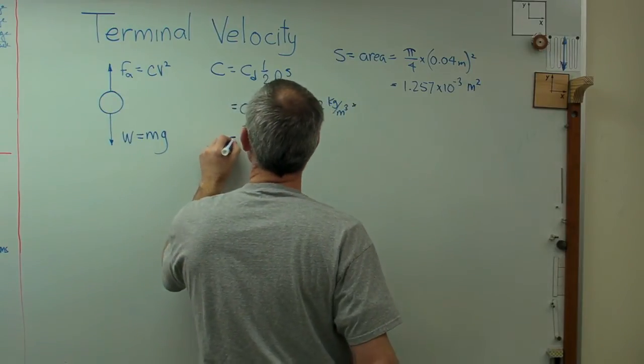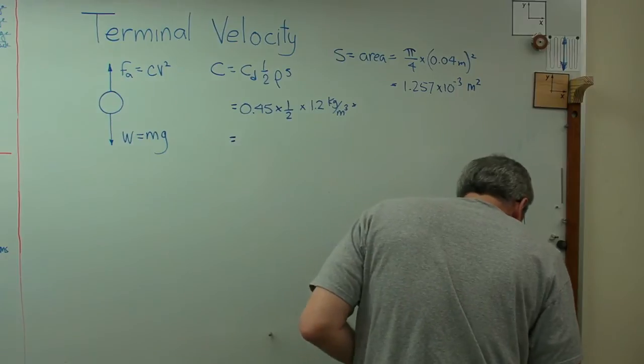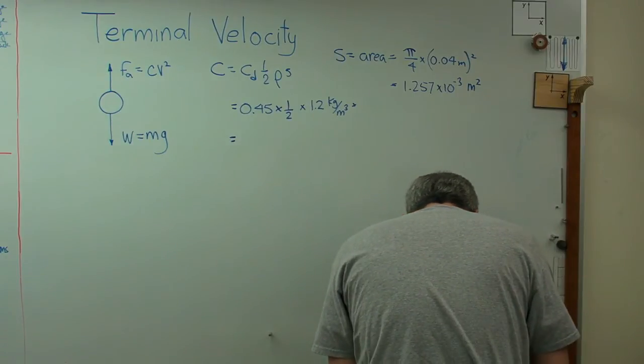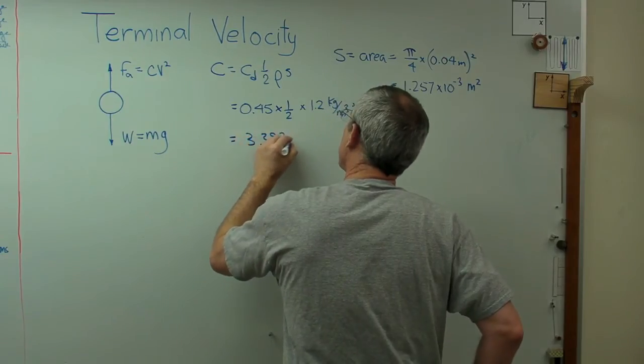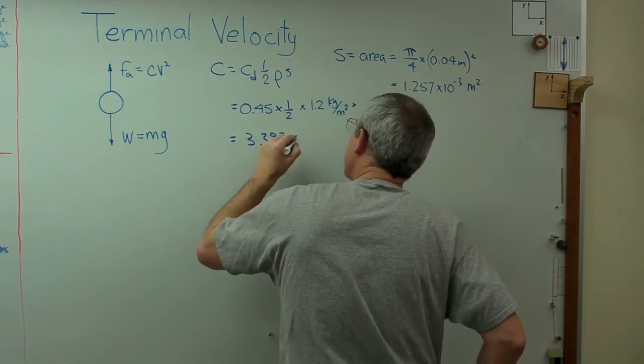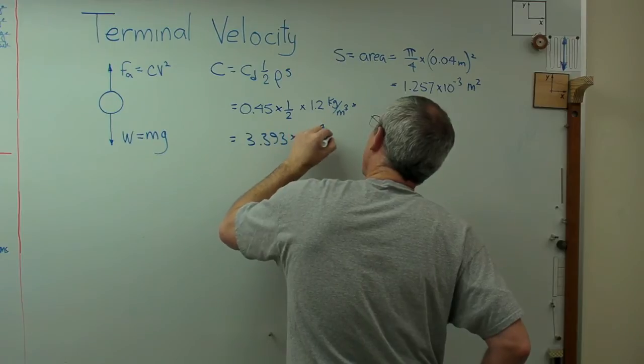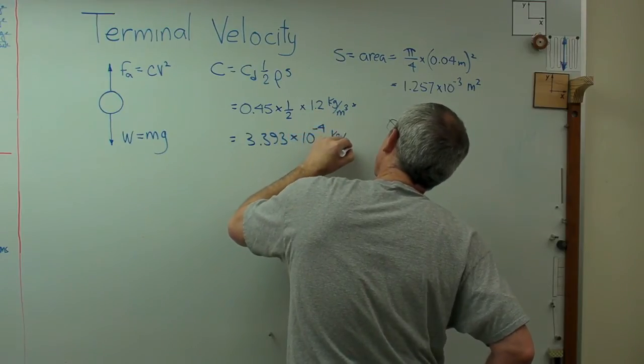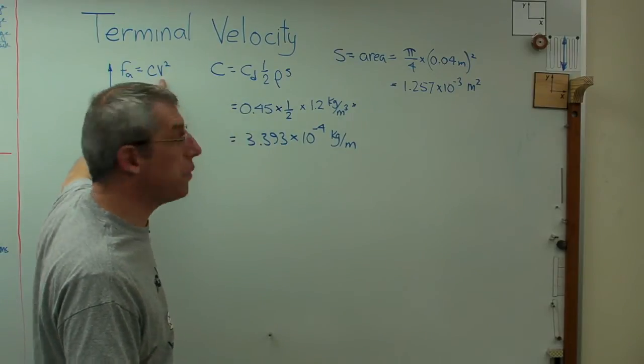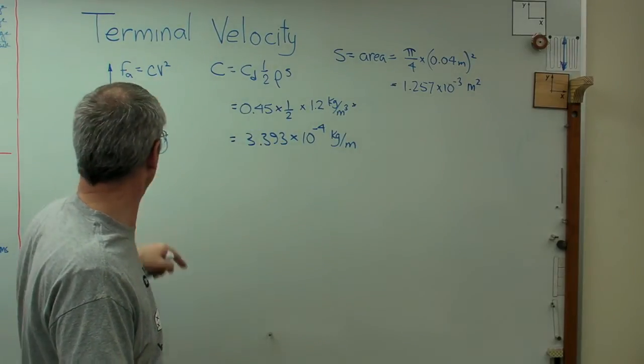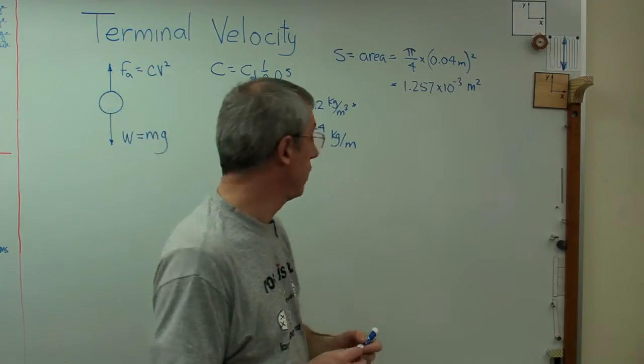And if we work all these numbers out, c turns out to be 3.393 times 10 to the minus 4 kilograms per meter. Now that's a really oddball unit. But remember, we're going to multiply this times velocity squared, and we're going to get a force.